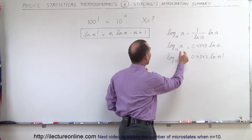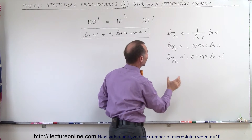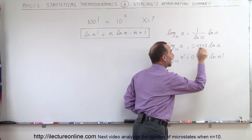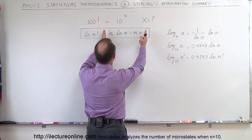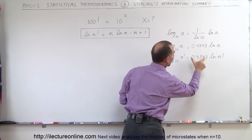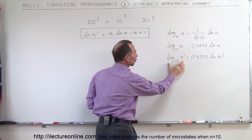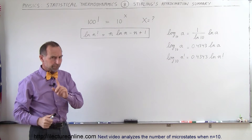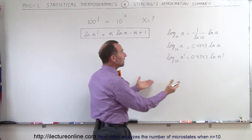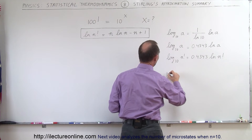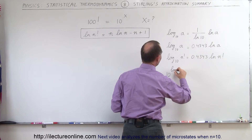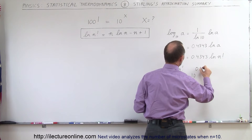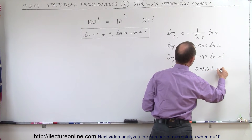If we replace a by n factorial, then we can say that log base 10 of n factorial is 0.4343 times the natural log of n factorial. It's simply taking the Stirling's approximation result and multiplying by 0.4343 to convert to log base 10, because then we can take the antilog and find out what the exponent of 10 is. So let's take the antilog of both sides: 10 raised to the log base 10 of n factorial equals 10 raised to 0.4343 times the natural log of n factorial.